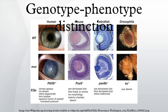The mapping of a set of genotypes to a set of phenotypes is sometimes referred to as the genotype-phenotype map. An organism's genotype is a major influencing factor in the development of its phenotype, but it is not the only one.